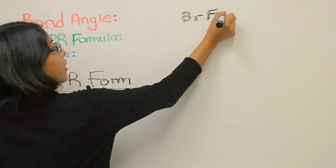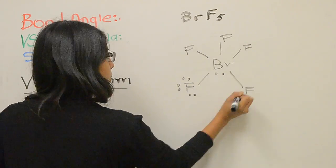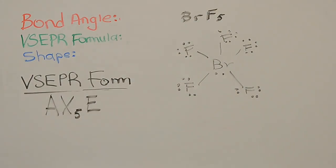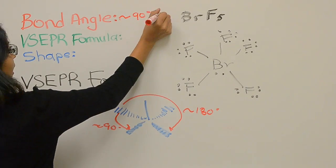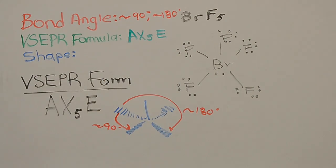Our next example is fluorine pentafluoride, which has a bond angle of approximately 90 degrees and approximately 180 degrees. The VSEPR formula of AX5E1 shape is a pyramidal.